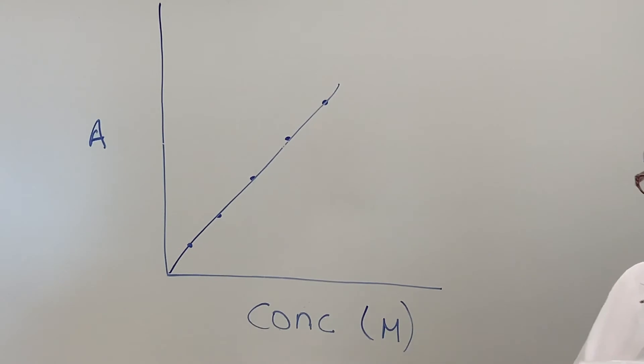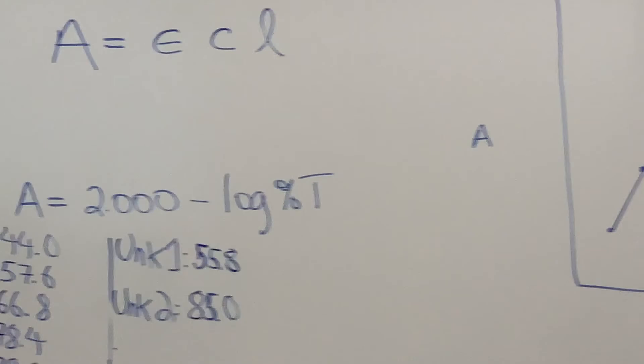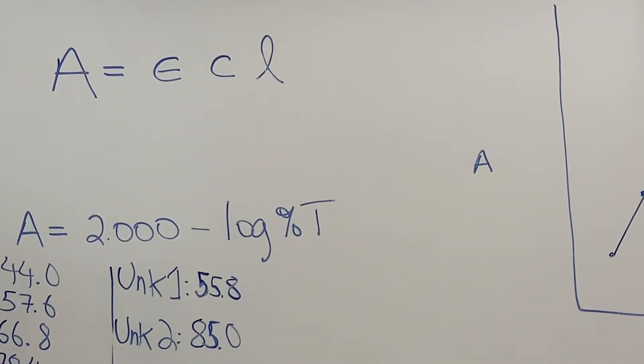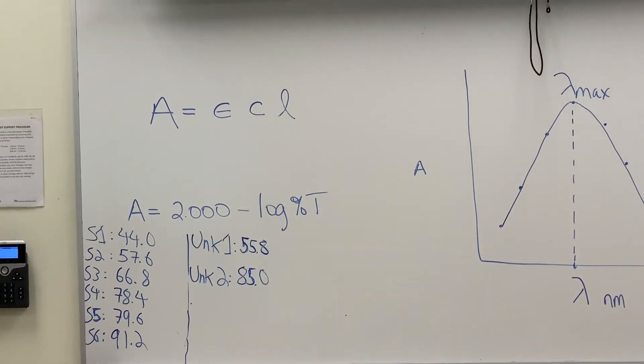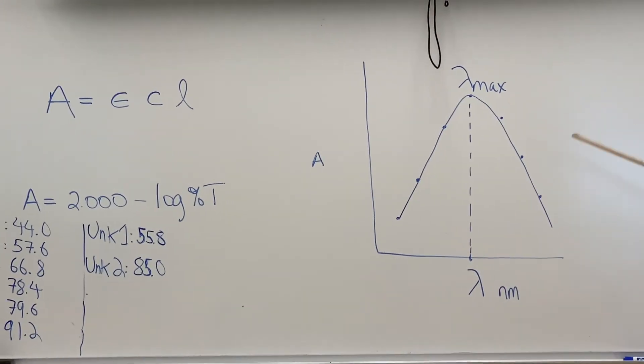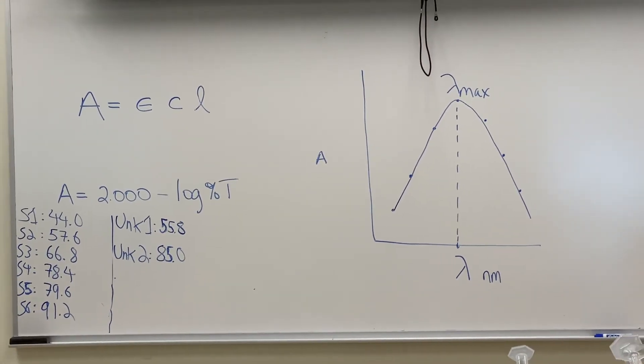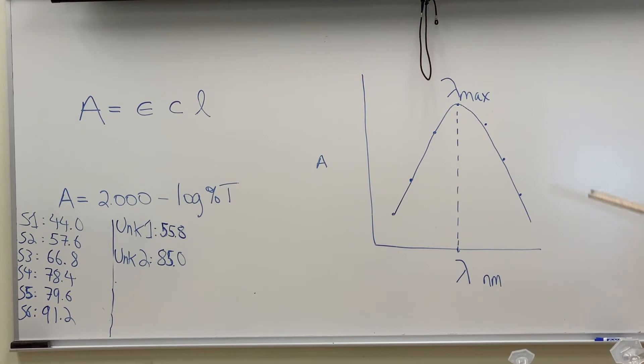I also want to just mention a couple other things about the Beer-Lambert Law. We're using it today. We're not really using the equation per se to find the concentration because we're using a graph to do that. But if you're looking at the equation, the absorbance equals the epsilon times concentration times the cell path. If you do the absorbance and you do the epsilon value, the molar absorptivity, then you could calculate the concentration.